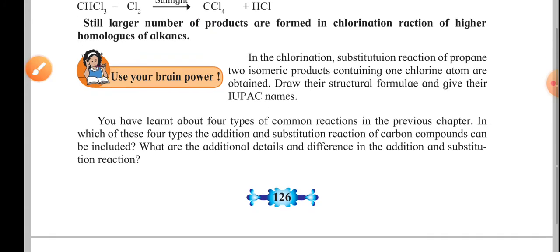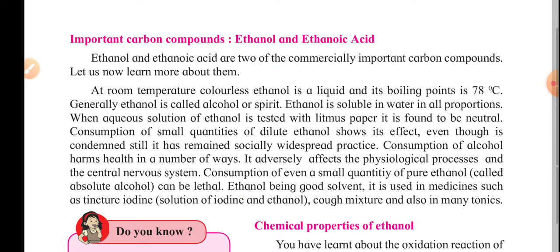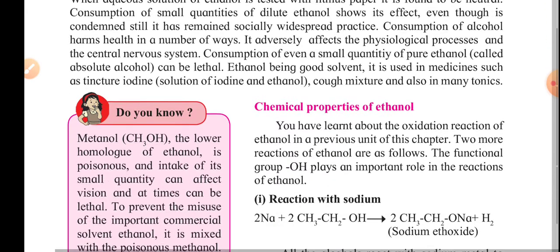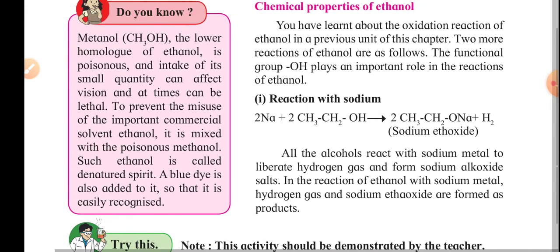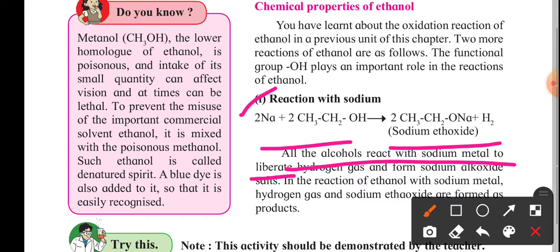Next we study important carbon compounds — ethanol and ethanoic acid. Regarding the chemical properties of ethanol: when ethanol reacts with sodium, it forms sodium ethoxide. All alcohols react with sodium metal to liberate hydrogen gas and form sodium alkoxide salts. So hydrogen gas and sodium ethoxide are formed as products.